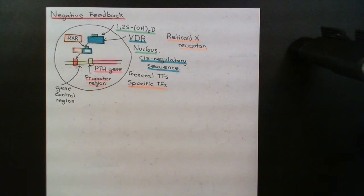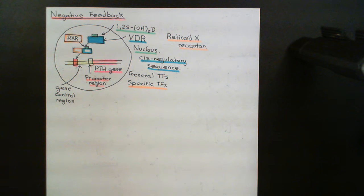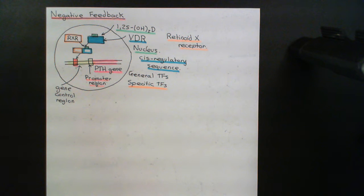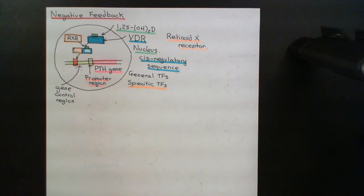Welcome back to this next video in which we're discussing the parathyroid glands and vitamin D. We've talked about vitamin D and the fact that when parathyroid hormone is released into the blood, one of the things it does is activate the production of the active form of vitamin D, which is 1,25-dihydroxyvitamin D. What we now want to see is how vitamin D is going to act with parathyroid hormone to further raise calcium level.